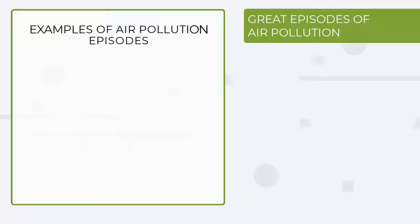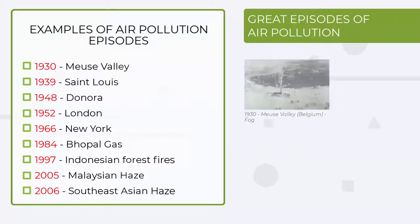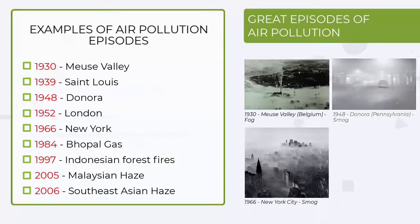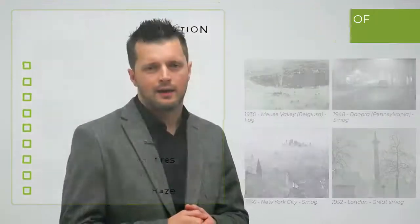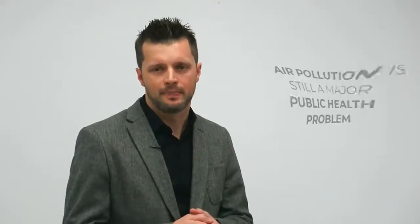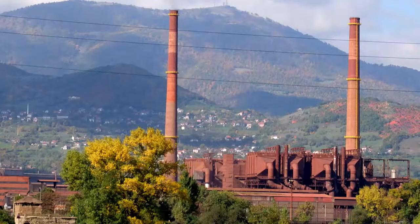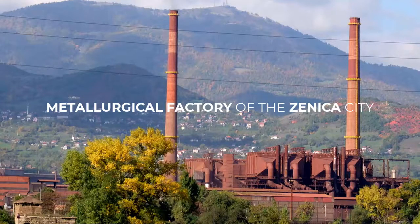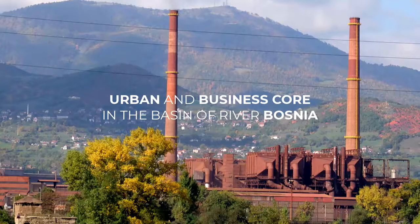The most famous episodes of atmospheric pollution in the last century were the chloride poisoning in the Meuse River Valley in Belgium, acid smoke poisoning in Donora, Pennsylvania, and London. Despite significant success in reducing global levels of air pollutants, air pollution is still a major public health problem in cities worldwide. One such city is Zenica, with its huge 100-year-old metallurgical factory and its urban and business core located in the narrow basin of the river Bosnia.